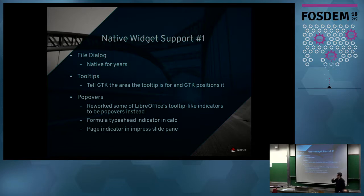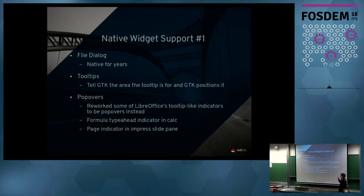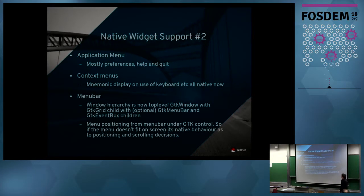Additionally, we're now using popovers for some things that used to be tooltips. They're a little different in GTK3 — they have a little indicator pointing down to the thing being referenced. We have them for formula type-ahead in Calc and the page indicator in the Impress slide pane. The original motivation for making them native was that under Wayland it's very difficult to do your own tooltip-style things, so we just use GTK ones.